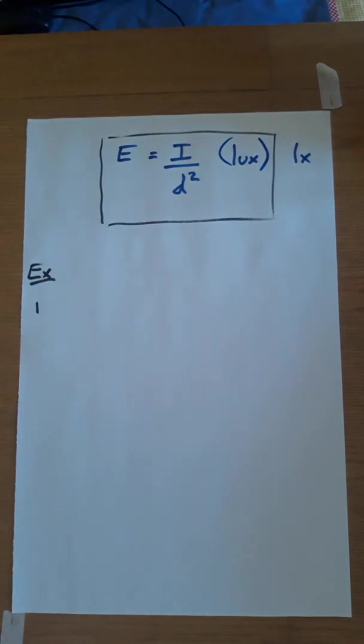On your handout I've written in a row three calculations which all pertain to the same lamp. So we have a lamp with an intensity of 500 candelas, and the idea is to figure out how much it illuminates a surface at one metre, two metre and three metres. So let's do that right now.